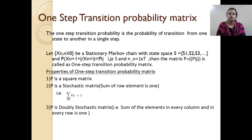Now, the one-step transition probability matrix. What are the properties of the one-step transition probability matrix? First, P is a square matrix — that is an n×n matrix: 2×2, 3×3, 4×4, and so on. Second, if P is a stochastic matrix — if the row-wise sum is 1 — it is called a stochastic matrix. Third, if P is a doubly stochastic matrix, then both the row-wise and column-wise sums equal 1. It is called a doubly stochastic matrix. These are the properties of the transition probability matrix.